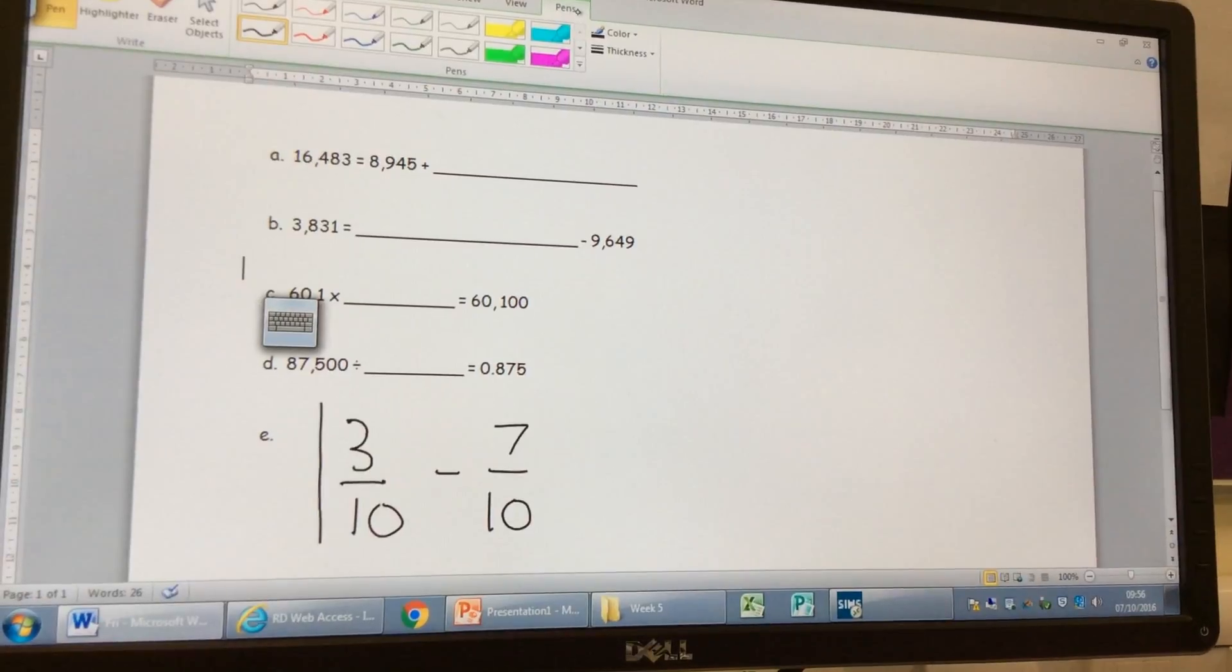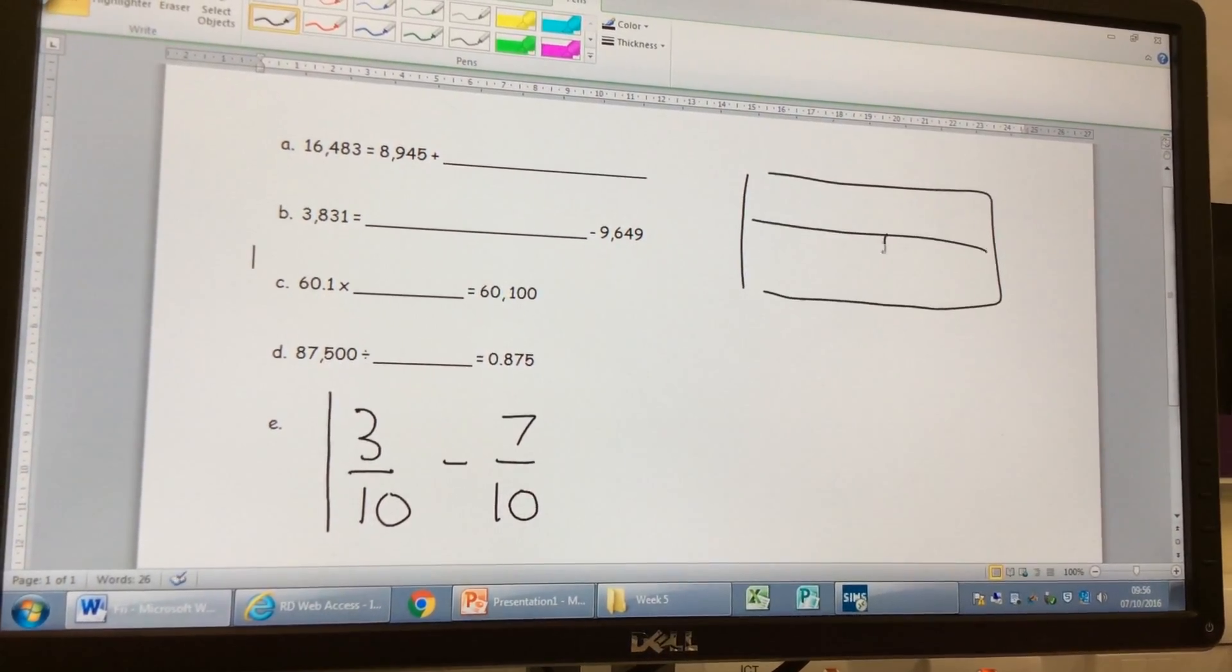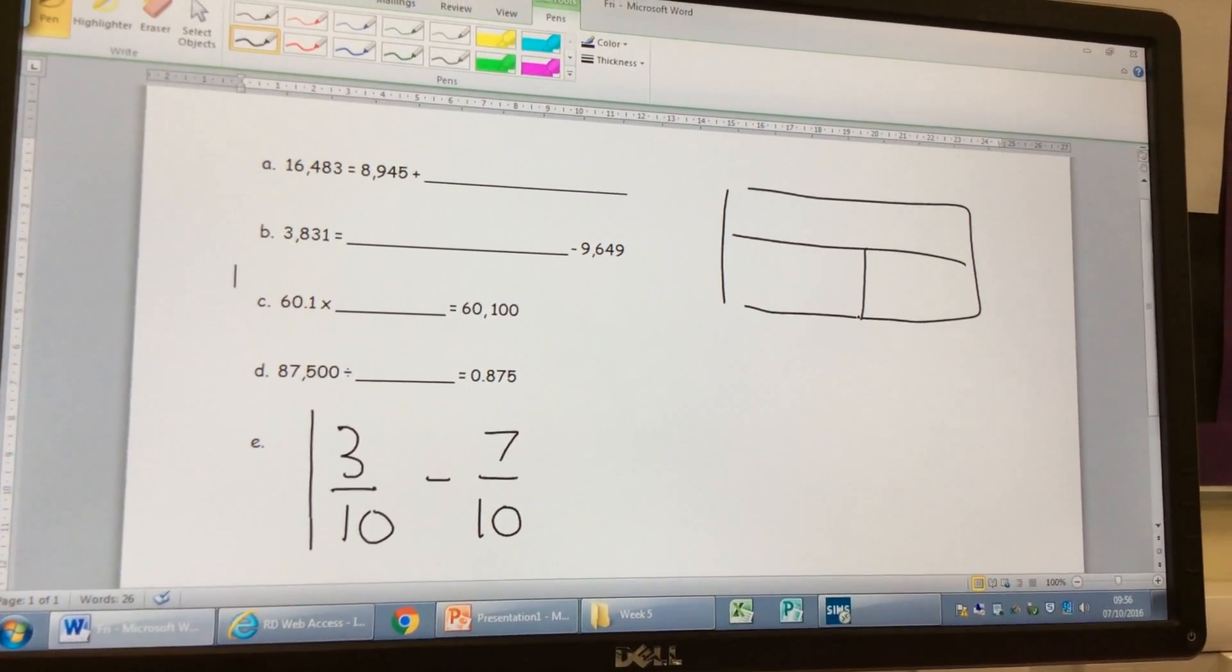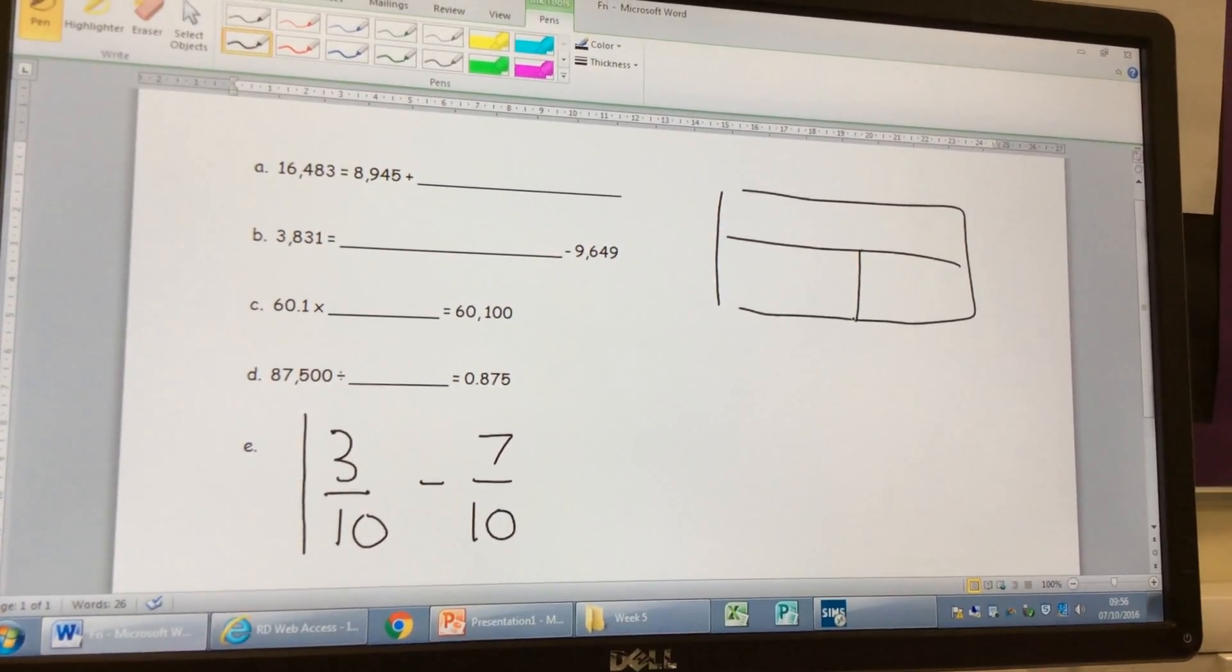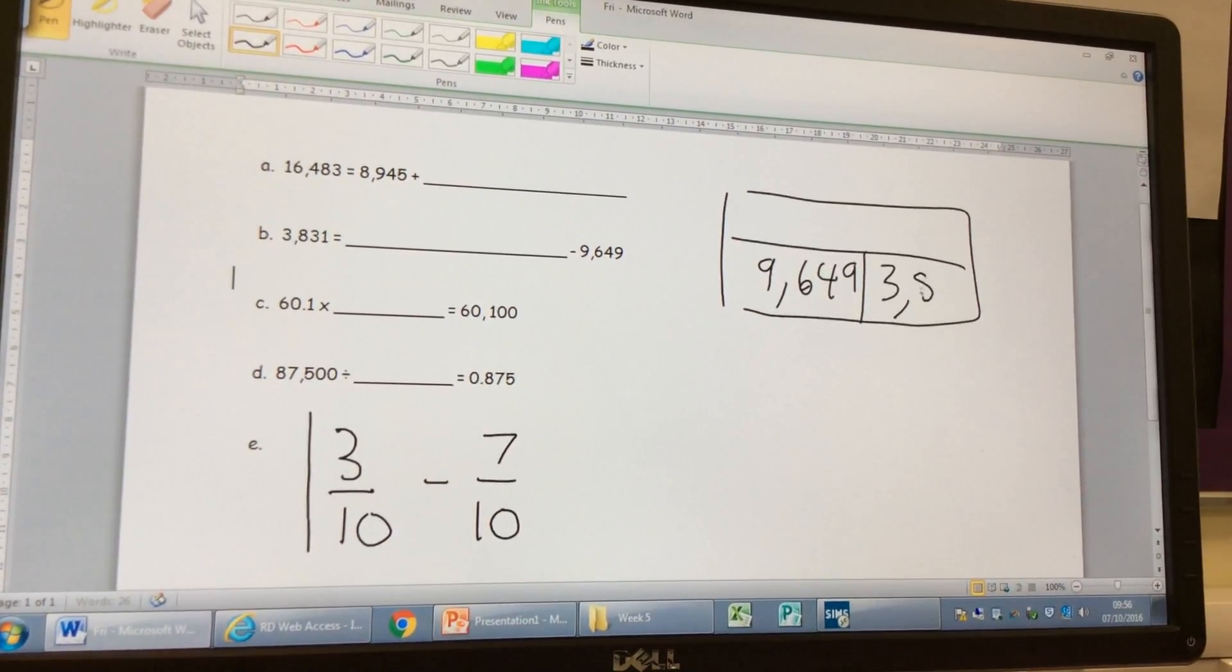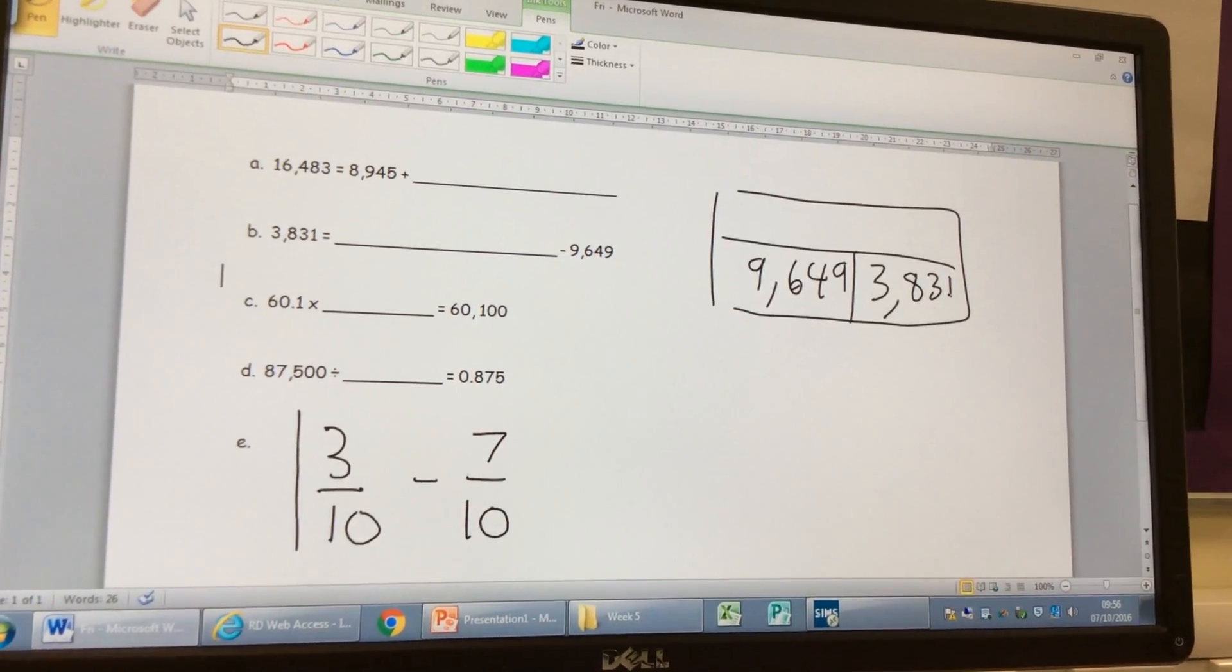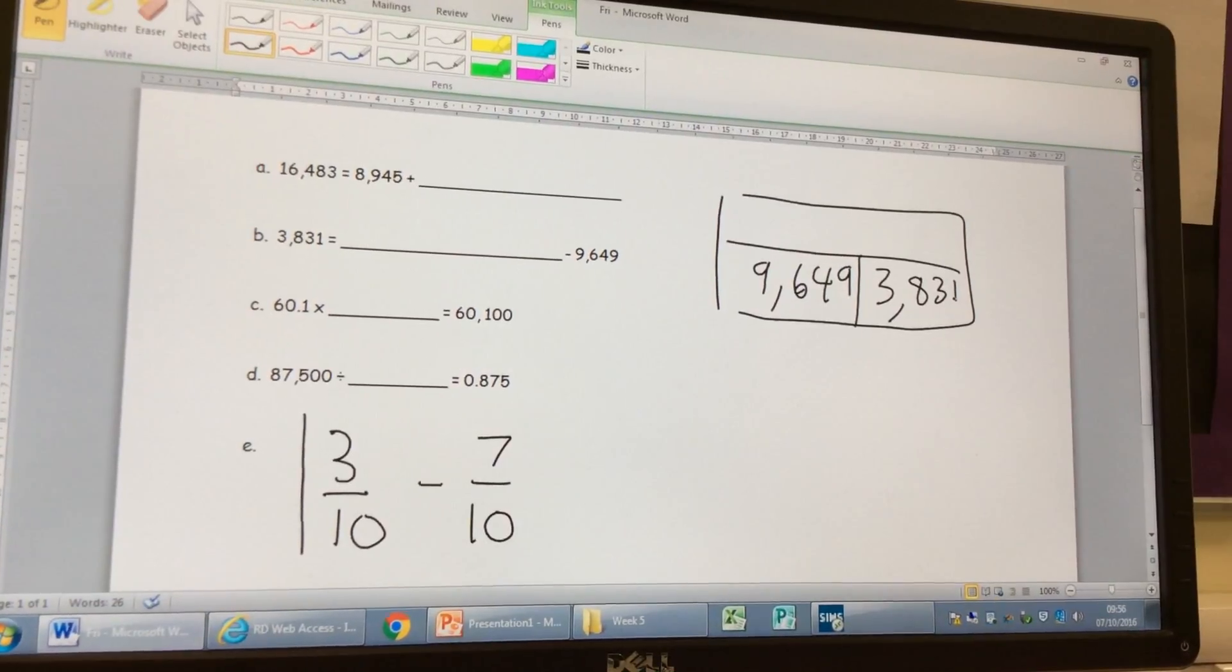Let's just double check that using a bar model. So if we're missing a whole, which bit am I leaving blank this time if I was putting this onto a bar model? The top bit. The top bit. And then we've got our two parts down here. So, 9,649 here and 3,831. And those two parts, as Anthony's just told us, make the whole. So what operation am I doing, Leo? We're going to do an addition calculation this time.